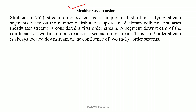In 1952, Strahler gave a simple method of classifying stream segments based on the number of tributaries upstream. A stream with no tributaries is considered a first order stream.